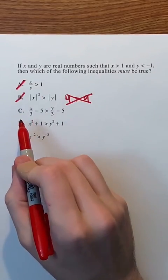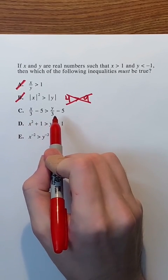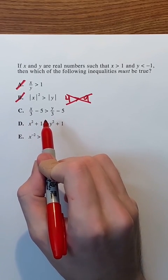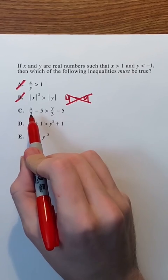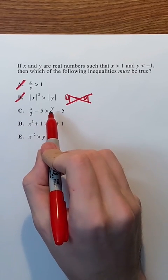In C, we have almost identical statements on both sides, with a greater than symbol in the middle. The only difference is that we have x over 3 on the left side, and y over 3 on the right side.